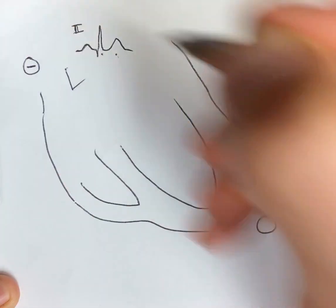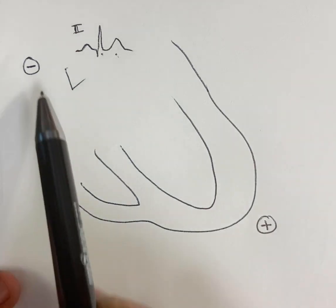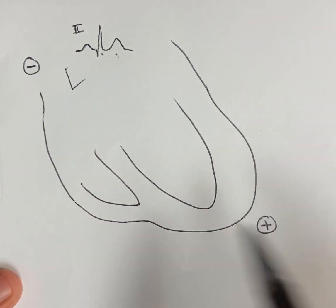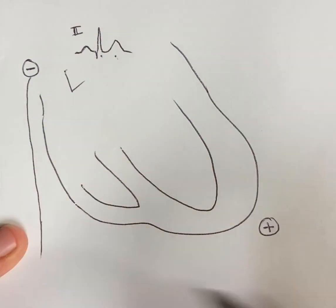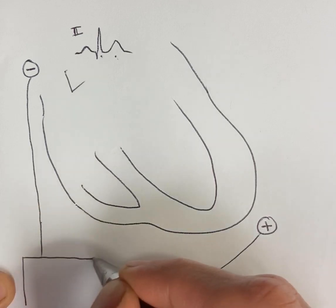On the right shoulder, there's a negative electrode, and the leg limb lead has a positive electrode that helps create this direction downwards to the left that we call lead 2. The way we actually get the output is that the wires go into the machine.